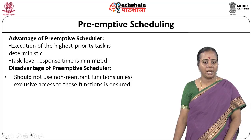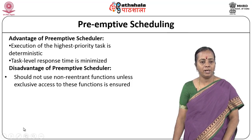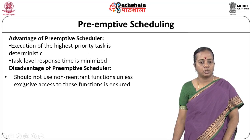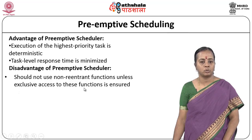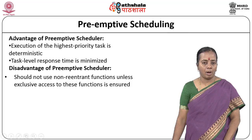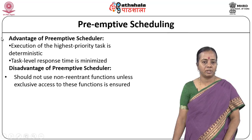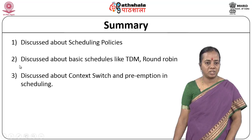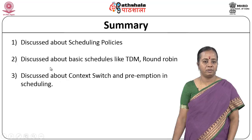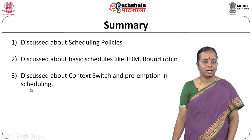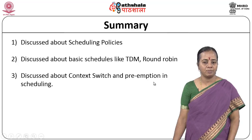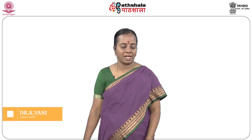When looking at preemptive scheduling, there are certain advantages and disadvantages. The advantages are: the task-level response time is minimized, and the execution of the highest priority task is deterministic. The disadvantage is it should not use non-reentrant functions unless exclusive access to these functions is ensured. For real-time operating systems, preemptive scheduling is best so that real-time situations can be handled effectively with respect to embedded systems. In this lecture we discussed basic scheduling policies, TDMA and round robin scheduling methods, and how context switching and preemption are important in RTOS and priority-based scheduling.